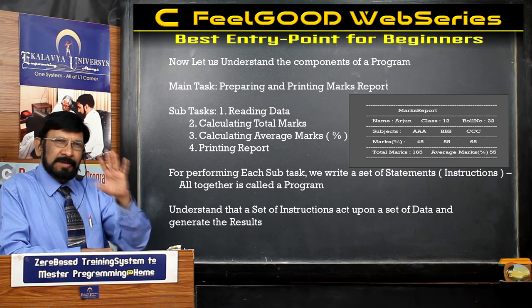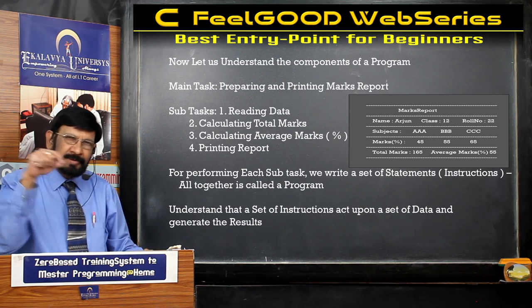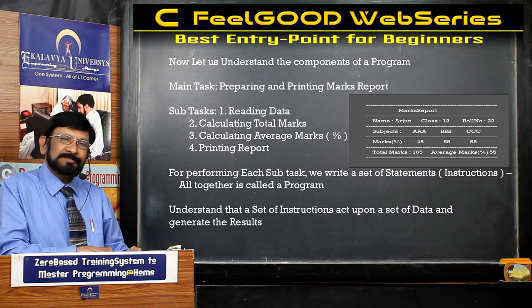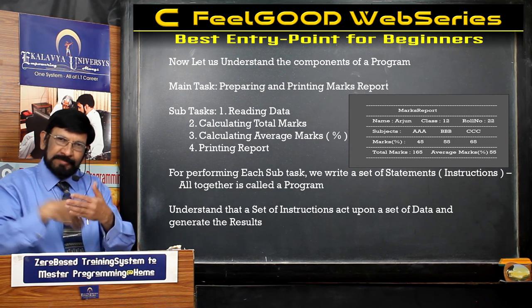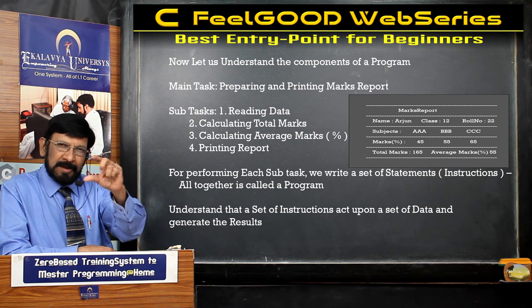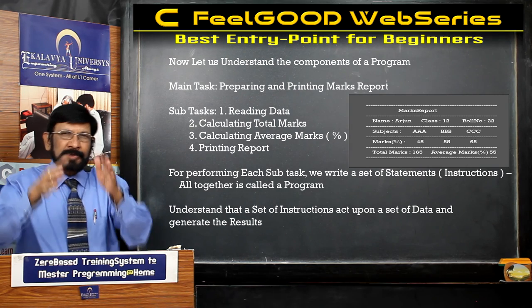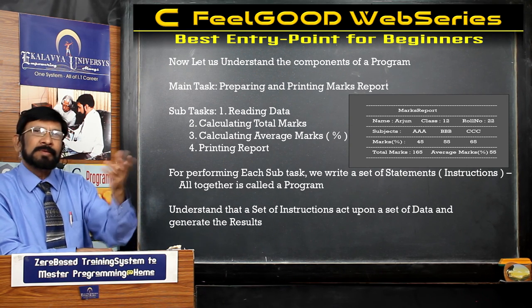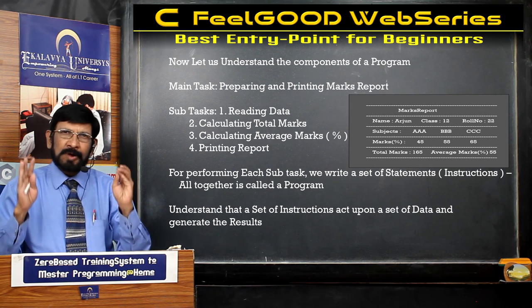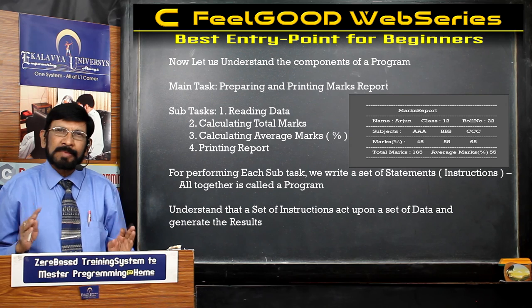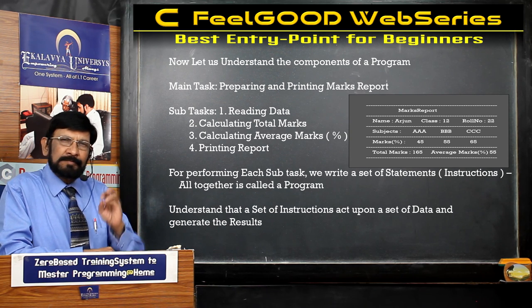In this manner, before writing a program you should have understanding. Then only, for performing each subtask, a set of statements you write. That is why you can find a paragraph-like segment — each segment or paragraph performs a subtask. Ultimately the collective contribution of all four subtasks means your main task is performed. This is the way — first you have to understand what is a program. This knowledge is essential for every programming student before entering into programming.